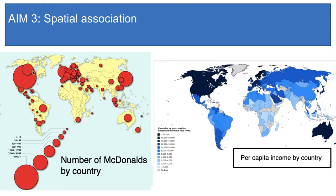Remember, on the left the bigger the dot, the more McDonald's there are. And on the right, the darker the blue, the wealthier the country is. I do see quite a bit of spatial association here — the countries with lots of McDonald's tend to be the countries that are wealthier. Take a look at the US: lots of McDonald's, wealthy country. Europe: lots of McDonald's, lots of wealthy countries. Australia: lots of McDonald's, very wealthy country. So I would say that these two variables — the number of McDonald's and per capita income — do have a high degree of spatial association.